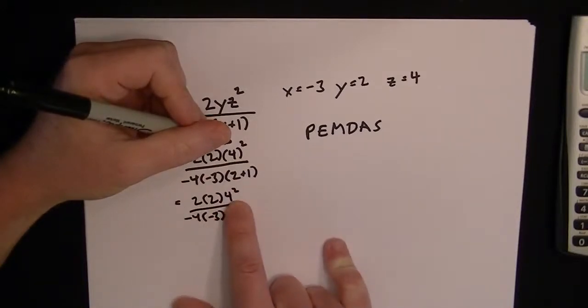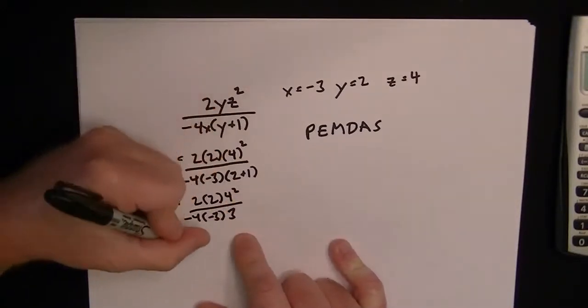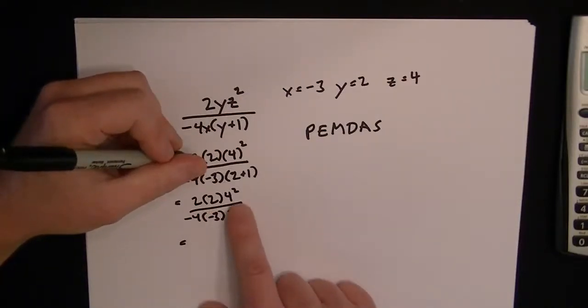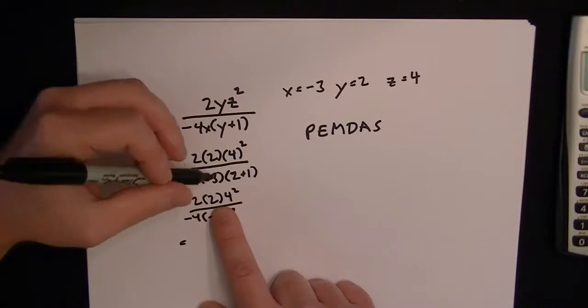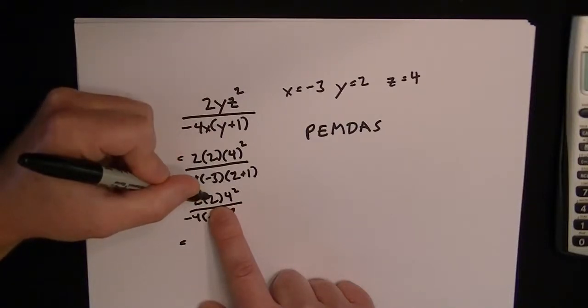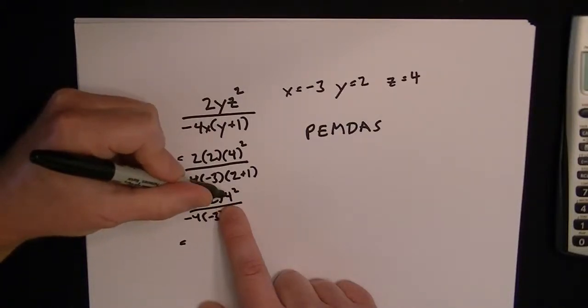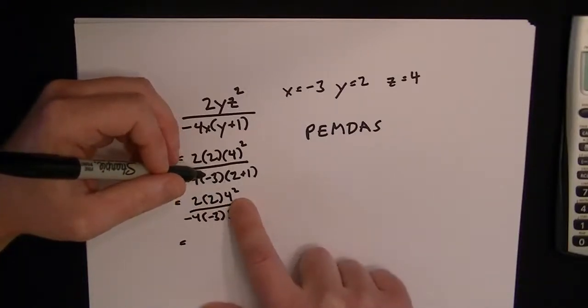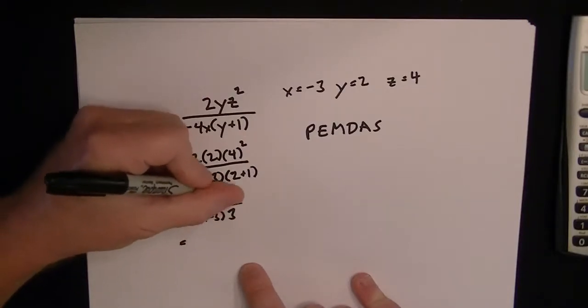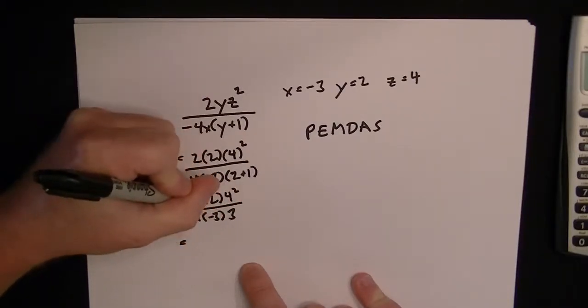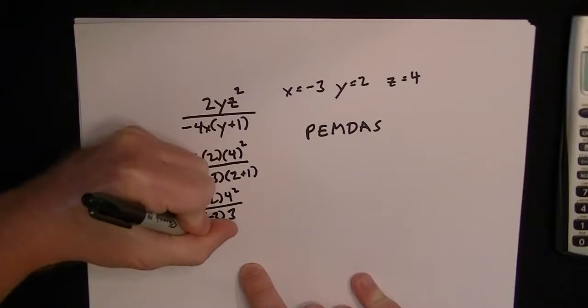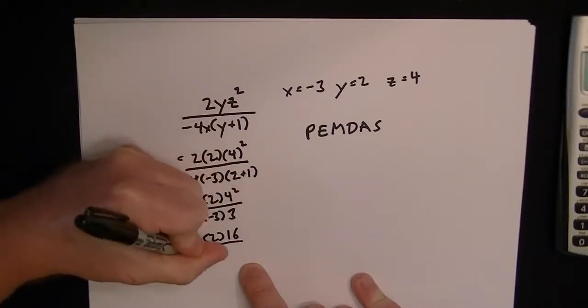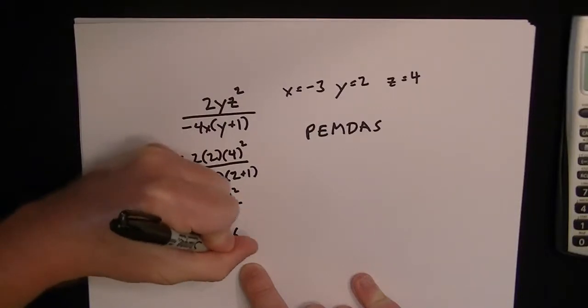So now we've got, we still have an exponent we want to deal with because that's the next thing you have to do. Because if you did it the other way, you wouldn't want to be 2 times 4 and then square that. That doesn't work. So you have to square this 4 first because it's 4 to the power 2.